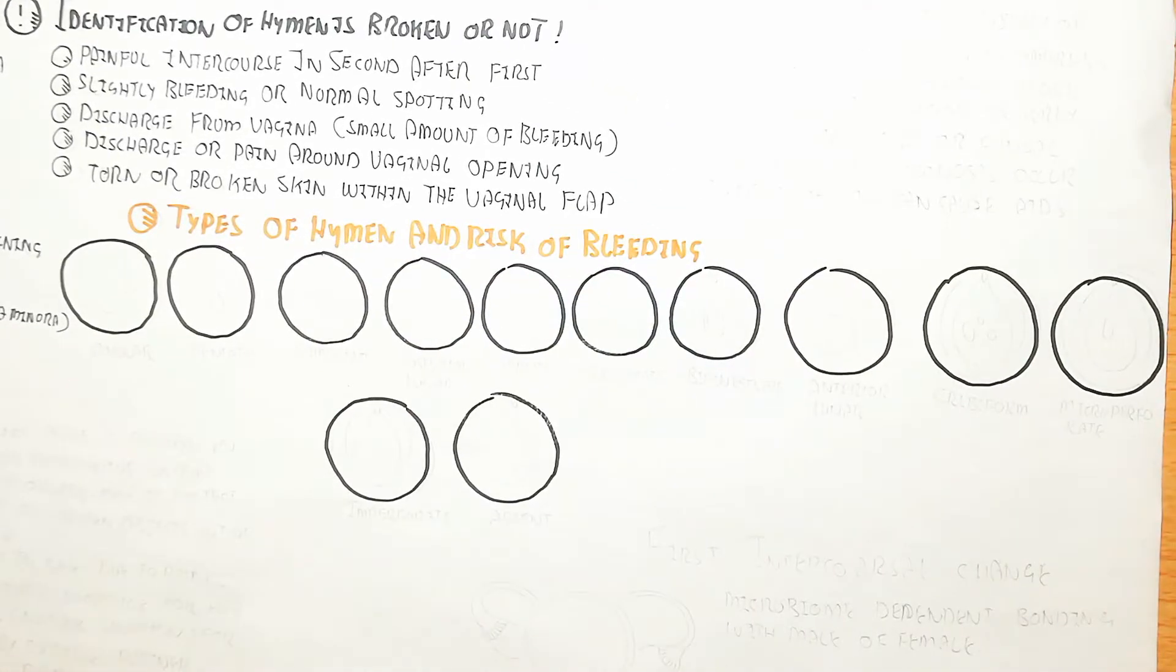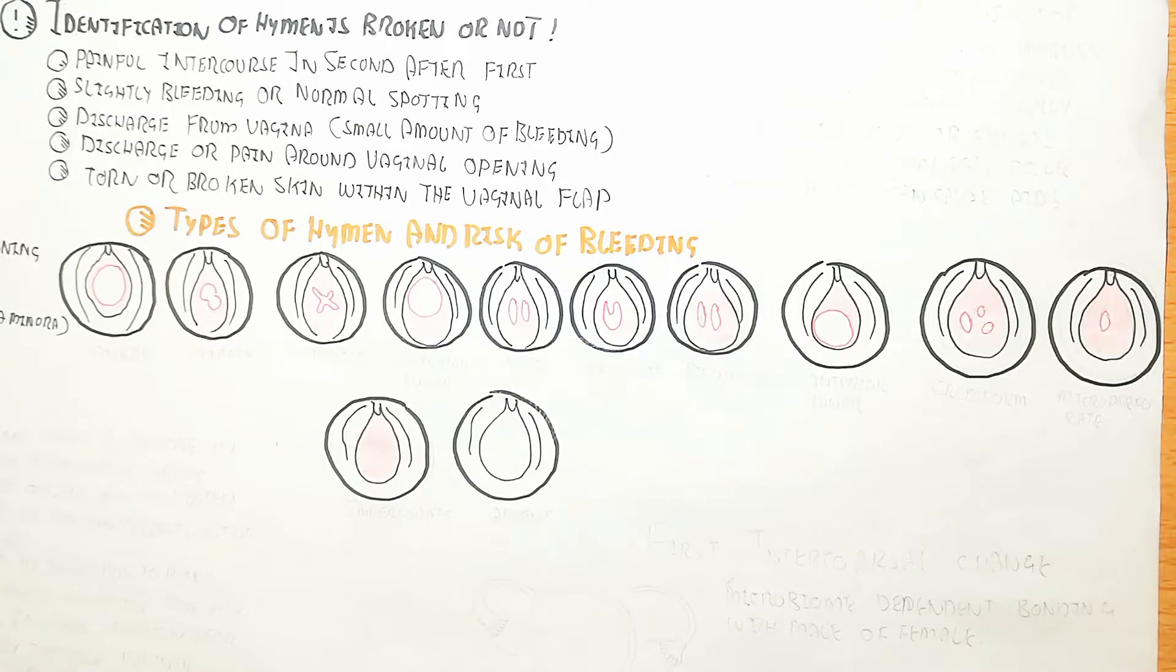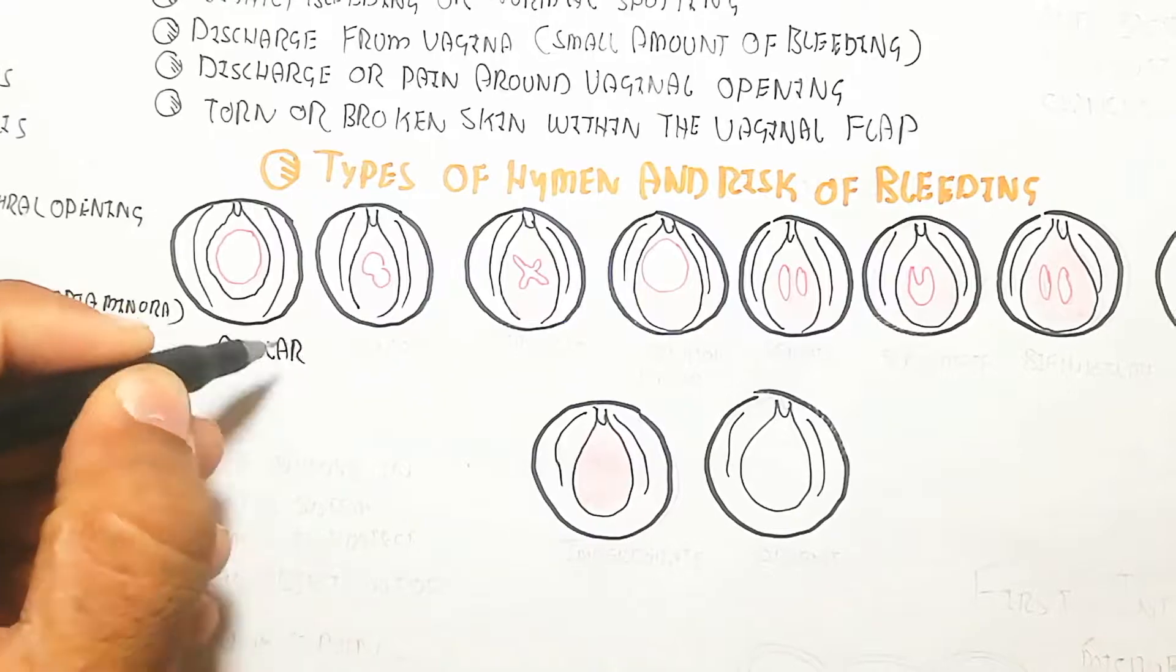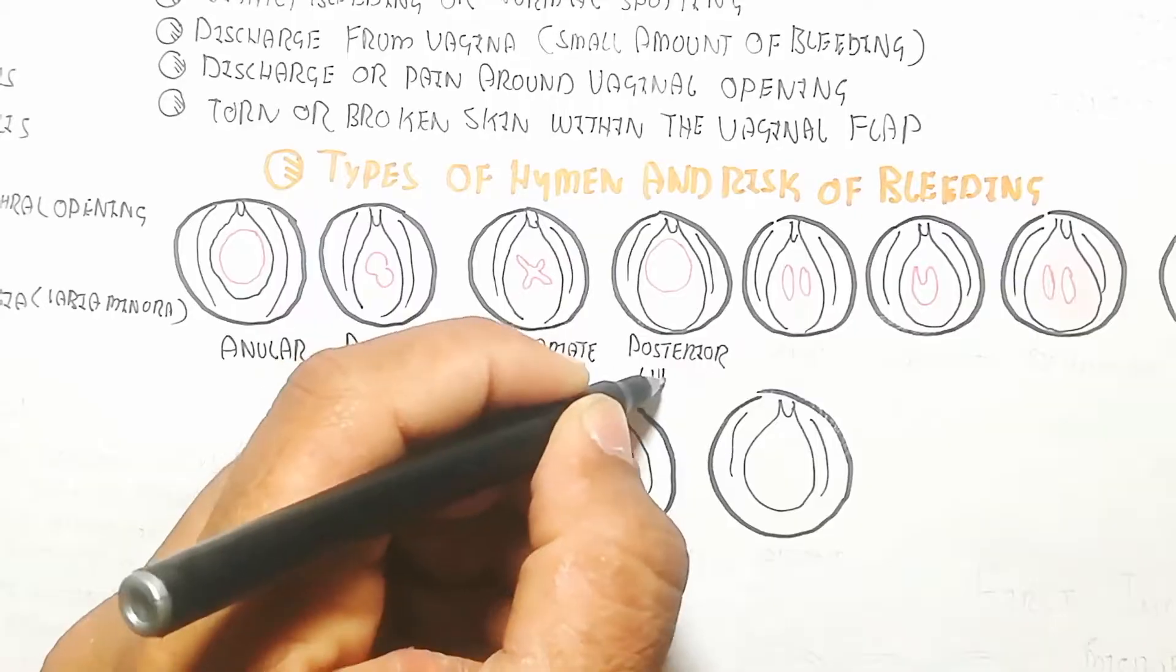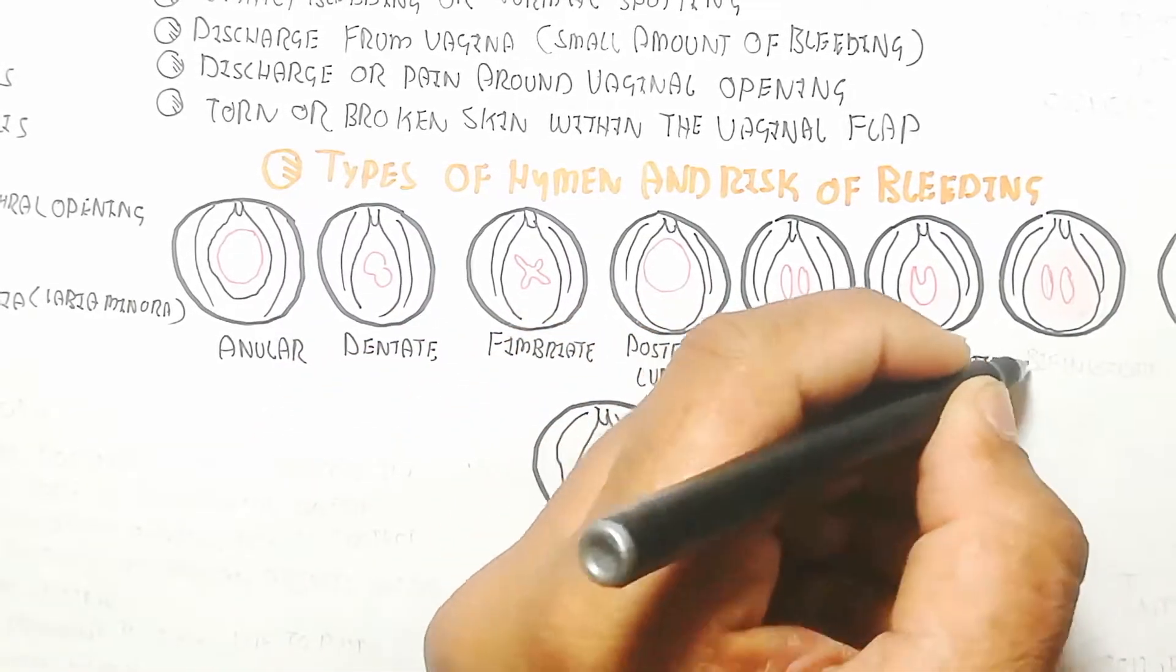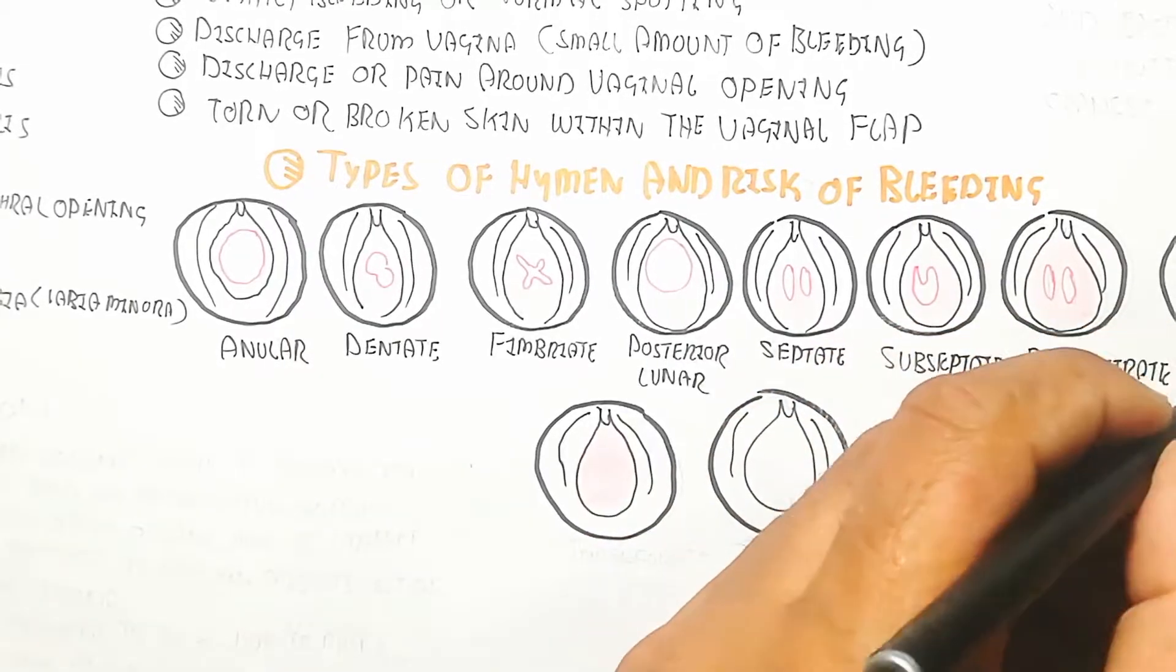Here are the types of hymen and risk of bleeding. Number one is annular. Annular basically requires less bleeding, while dentate causes more bleeding during intercourse. Fimbriate also shows virginity loss due to bleeding.